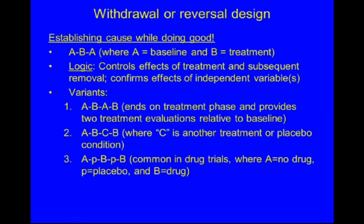The withdrawal or reversal design is about establishing cause while doing good. The classic form is ABA, where A equals the baseline condition and B equals treatment. So there's a baseline, a treatment is introduced, then the treatment is withdrawn. The logic is it controls the effects of treatment and subsequent removal, confirming the effects of the independent variables. Variants include the ABAB, which has the advantage of ending on a treatment phase and providing two different treatment evaluations relative to baseline, and an ABCB where C is another treatment or a placebo condition.